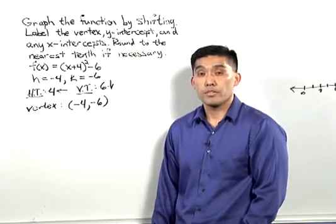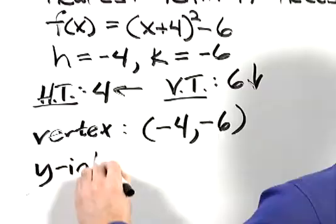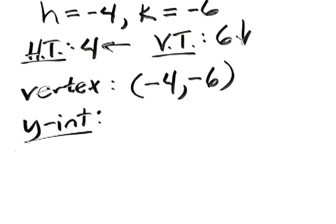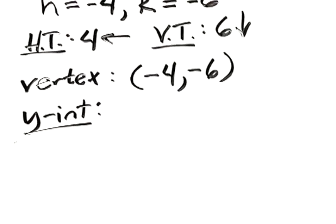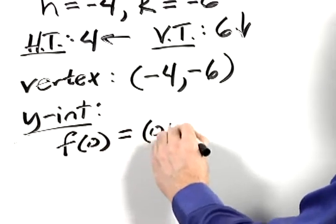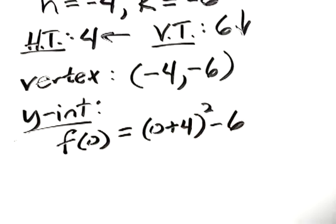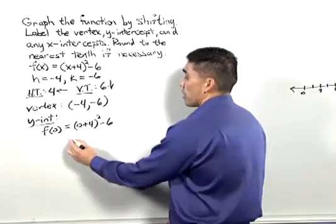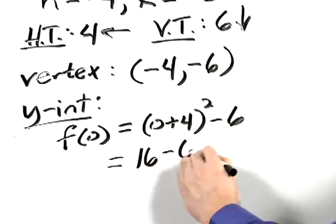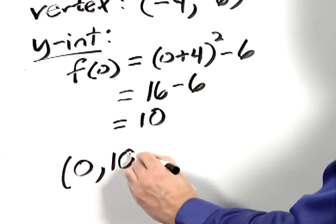Now let's find our intercepts. The y-intercept occurs when x equals 0. So let's evaluate f of 0. f of 0 equals 0 plus 4 quantity squared minus 6. 0 plus 4 is 4, and 4 squared is 16. So 16 minus 6 is 10. So the y-intercept is 0 comma 10.